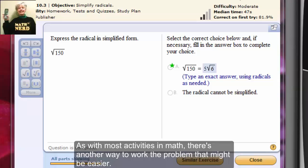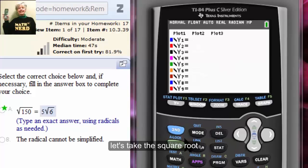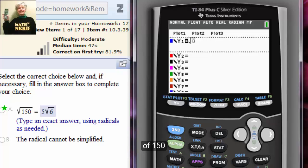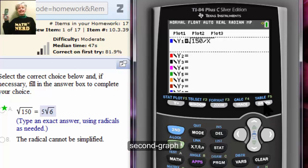As with most activities in math, there's another way to work the problem that might be easier. Let's take the square root of 150 divided by x. And I'm not going to graph it. Instead I'm going to look at the points.